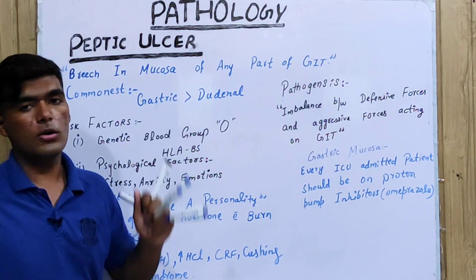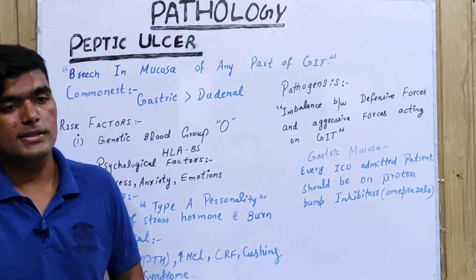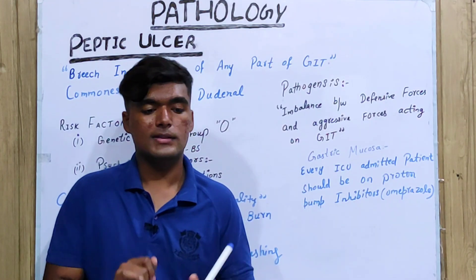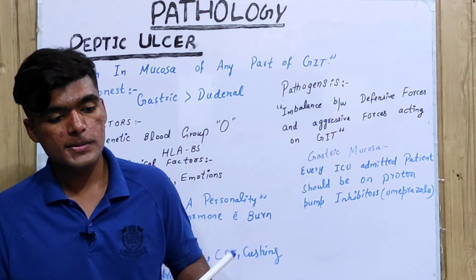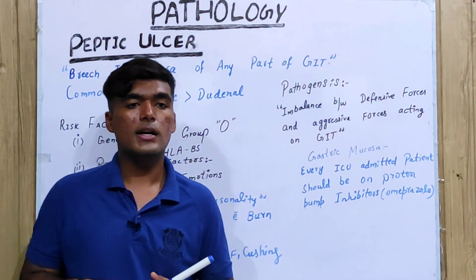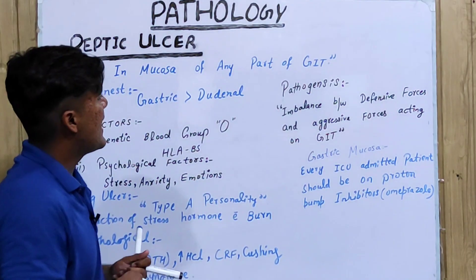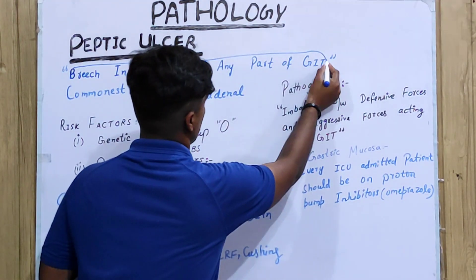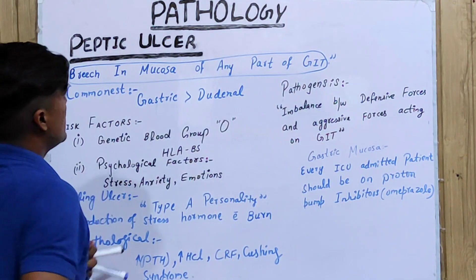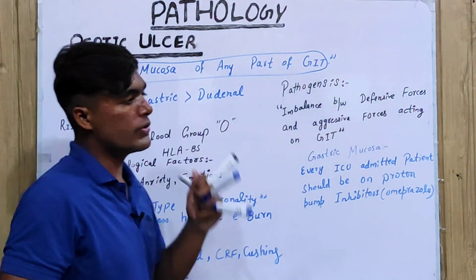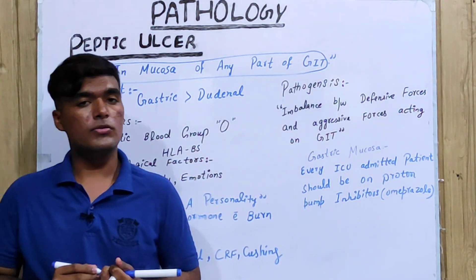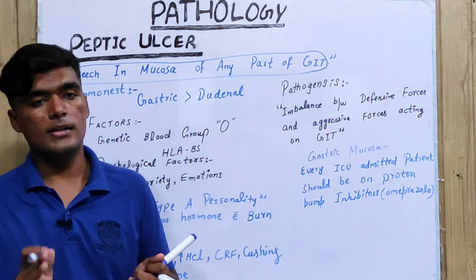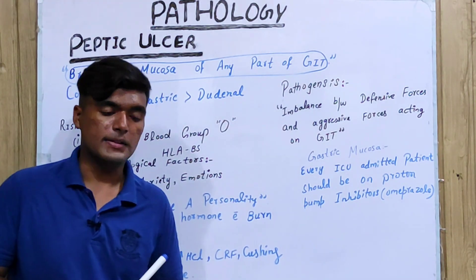In today's pathology series, we are going to talk about peptic ulcer. It is basically a breach in mucosa in any part of the GIT. So if a breach in the inner layer occurs, we develop an ulcer, and the name is peptic ulcer.